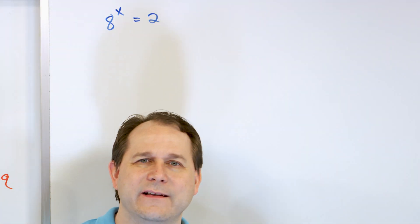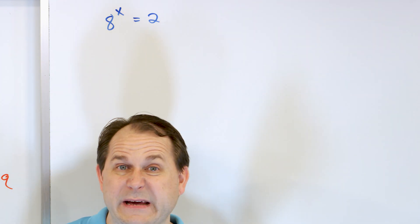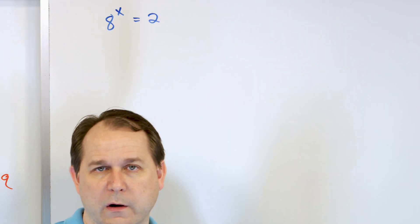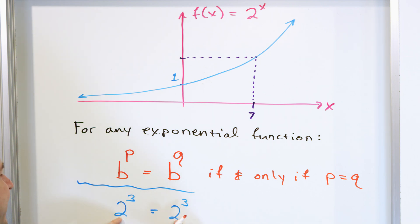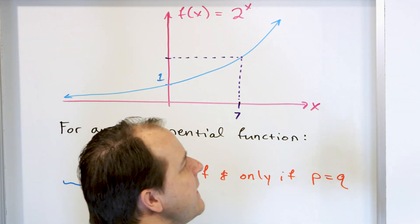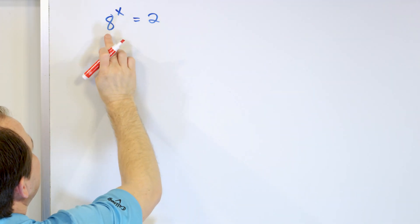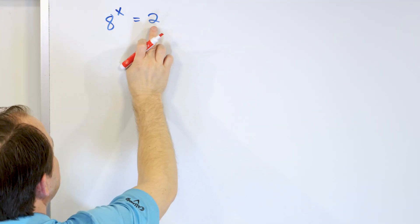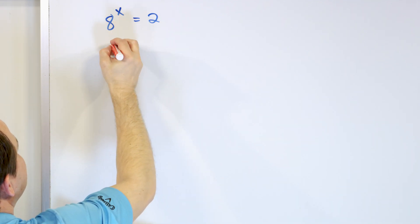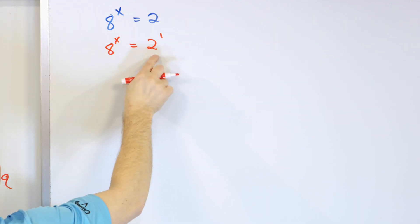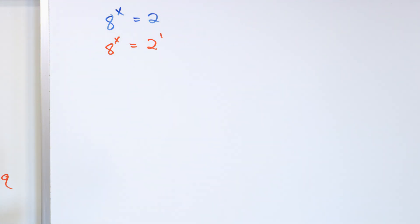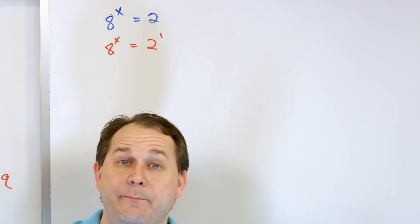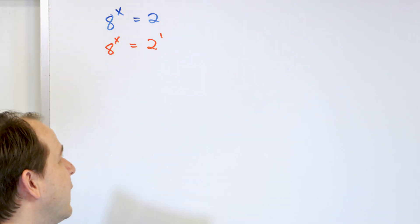When you see the answer, you'll understand why it has to be that. The key insight is: because the exponential function is one-to-one, and if you have the same base on both sides of the equal sign, the only way the equation holds is if the exponents are also equal. So we want to make the left-hand side have the same base as the right. We realize eight to the power of x equals two to the power of one.